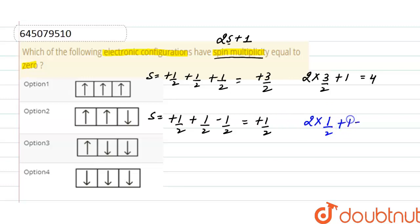That means here the spin multiplicity is 2. In option third, spin is plus half, minus half, and minus half.